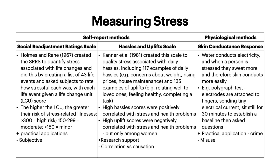Then we have the Hassles and Uplift Scale. Kanner et al. in 1981 created this scale to quantify stress associated with daily hassles, including 117 examples of daily hassles such as concerns about weight, rising prices and house maintenance, and 135 examples of uplifts such as relating well to loved ones, feeling healthy and completing a task. High hassle scores were positively correlated with stress and health problems. High uplift scores were negatively correlated with stress and health problems — so the higher the uplift score, the lower the stress and health problems. But this effect was actually only seen among women, which was really interesting. Again, there is research support for the basis of this scale, but like always, correlation versus causation.